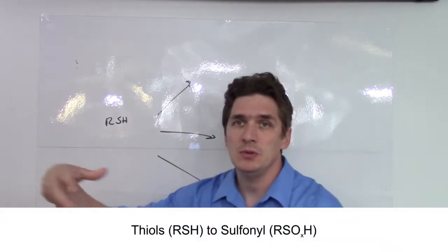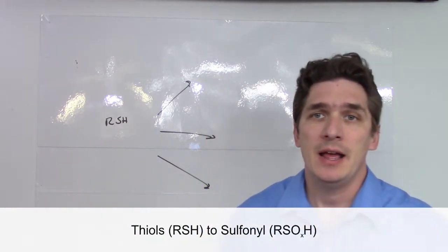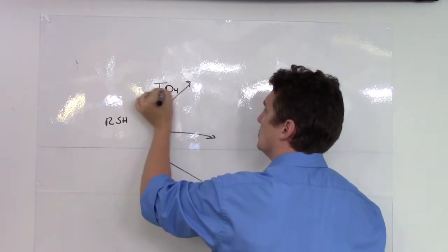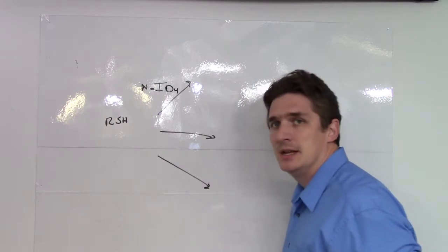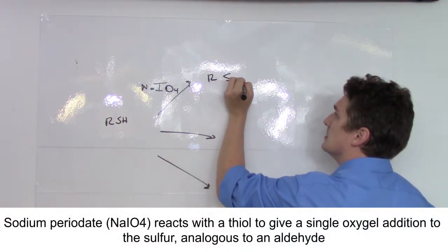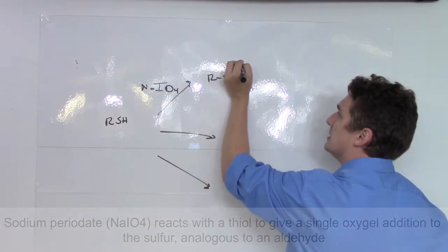One option is that you want to attach only one oxygen to the sulfur. And to do this, we just use sodium periodate. And this will give us the sulfonyl complex. Now, a comment on how this is drawn.